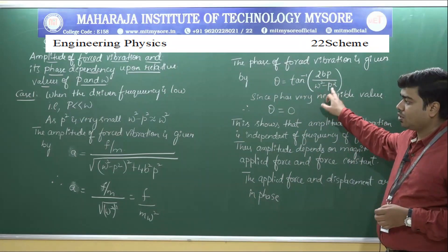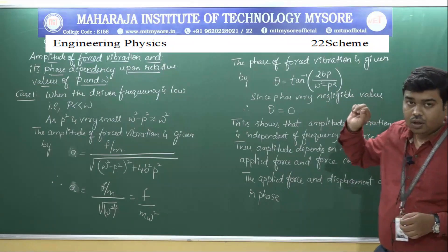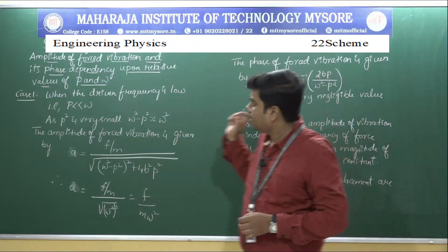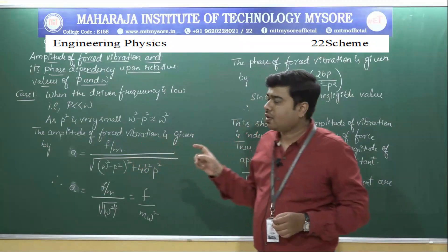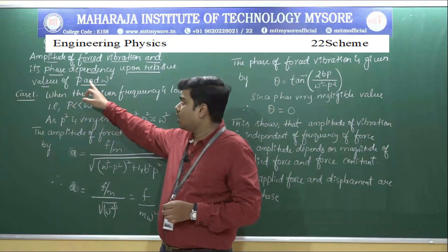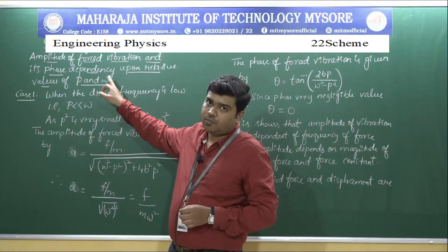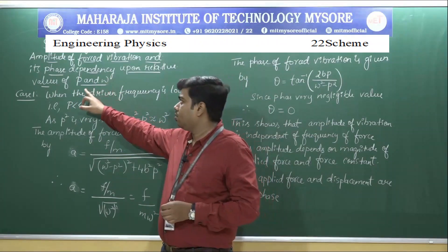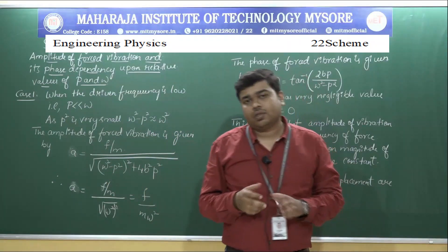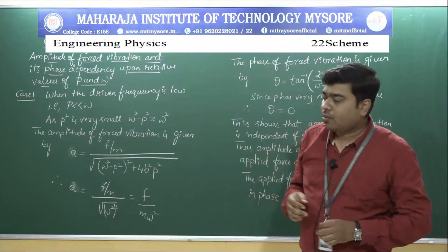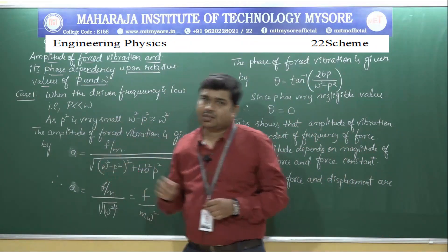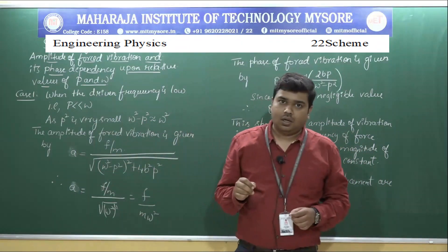The phase of the forced oscillation is given by theta equals tan inverse of 2bp divided by (omega squared minus p squared). In this session, we'll see how the amplitude and phase vary depending on the values of p, the frequency of the applied force, and omega, the natural frequency of the oscillating body. Three cases arise depending on the variation of p and omega.